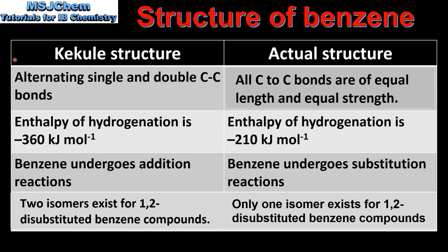In summary: according to the Kekulé structure benzene contains alternating single and double carbon to carbon bonds, but in the actual structure all carbon to carbon bonds are of equal length and equal strength. The Kekulé structure predicts an enthalpy of hydrogenation of -360 kJ/mol, but the actual value is -210 kJ/mol. The Kekulé structure predicts addition reactions, but benzene undergoes substitution reactions. Finally, two isomers would be expected for 1,2-disubstituted benzene compounds, but only one isomer exists.